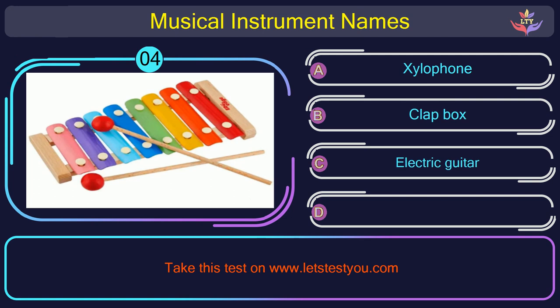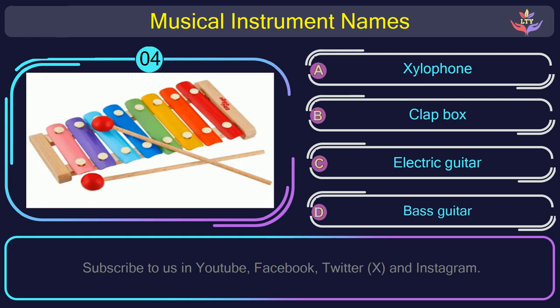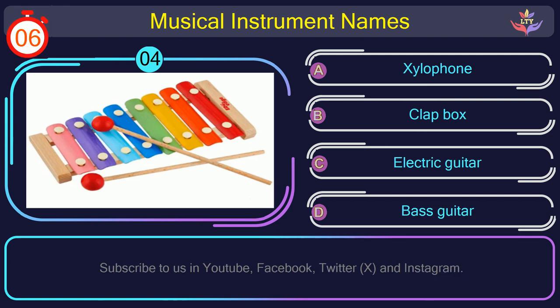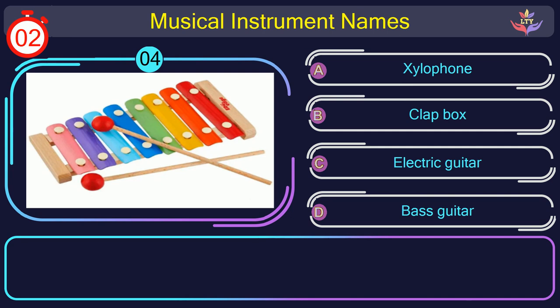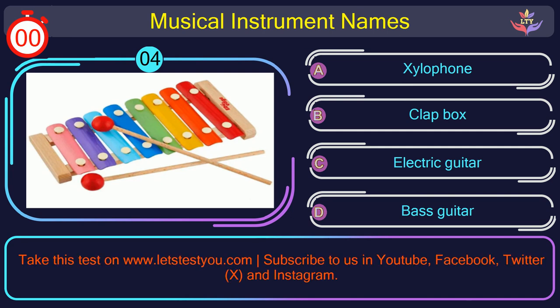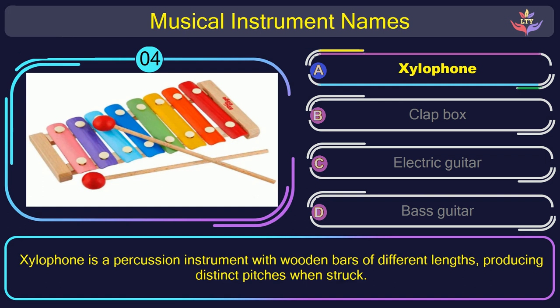Question number 4. Could you figure out the name of the musical instrument in this picture? The correct answer is option A: Xylophone. Xylophone is a percussion instrument with wooden bars of different lengths, producing distinct pitches when struck.